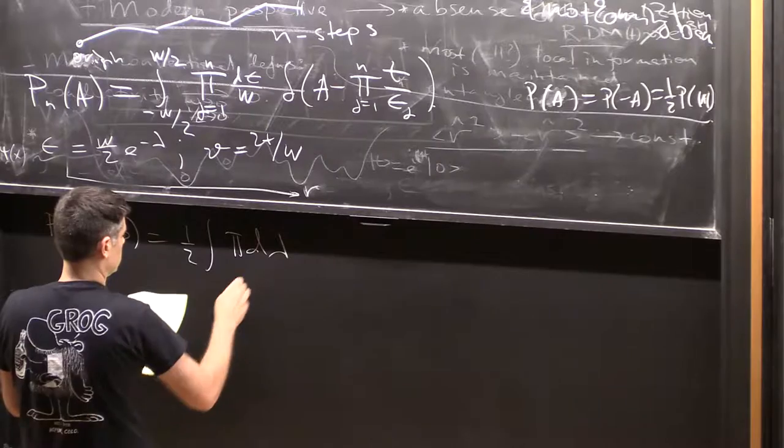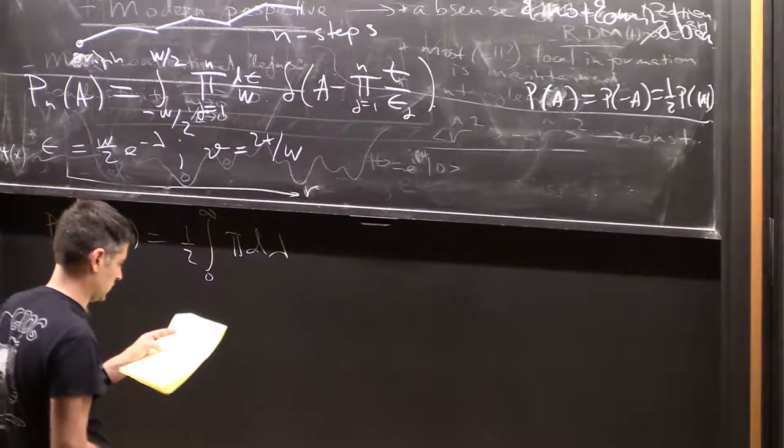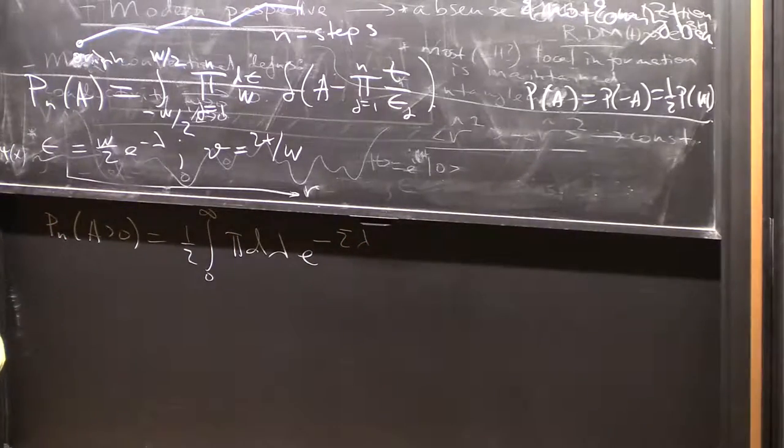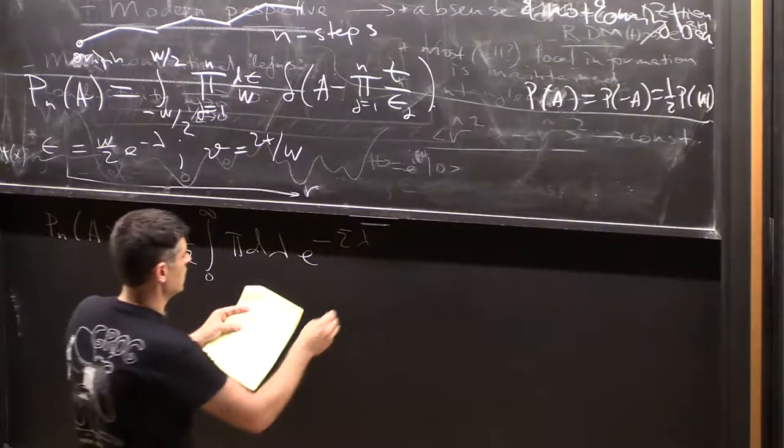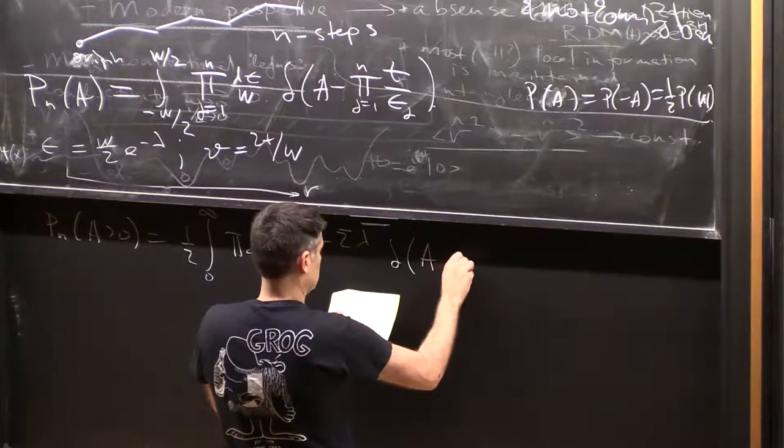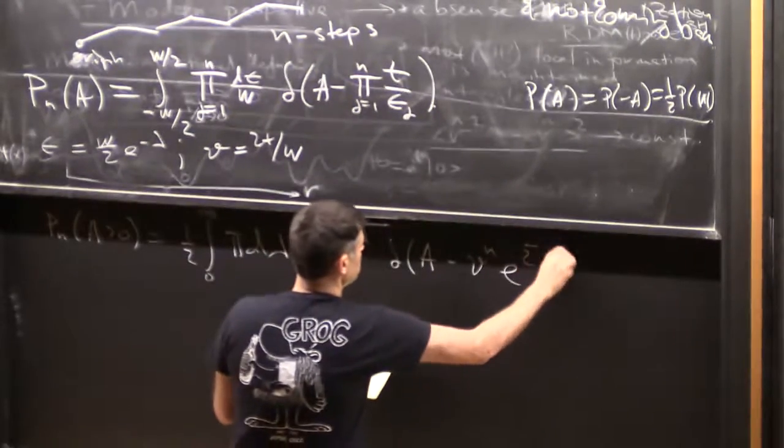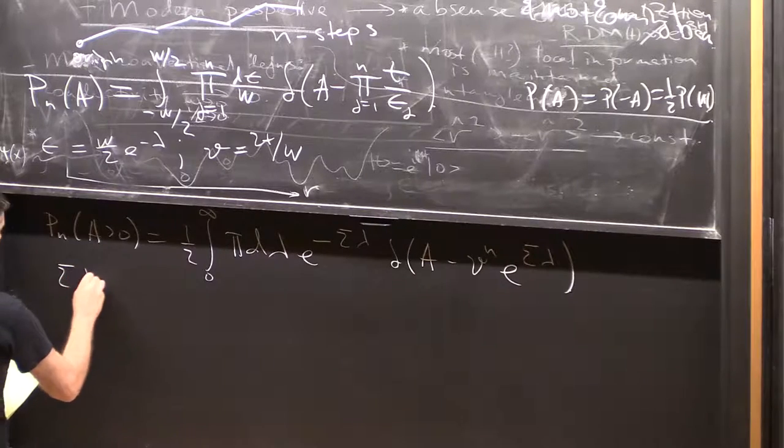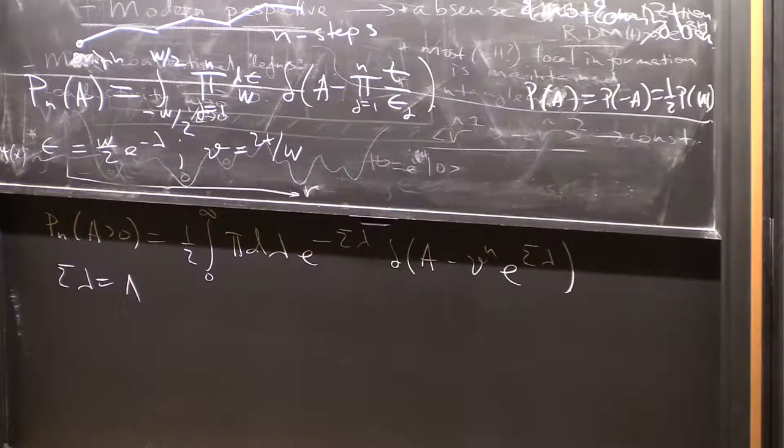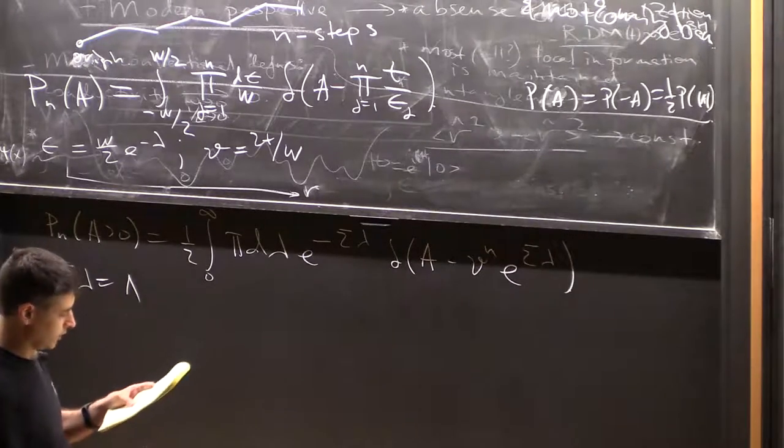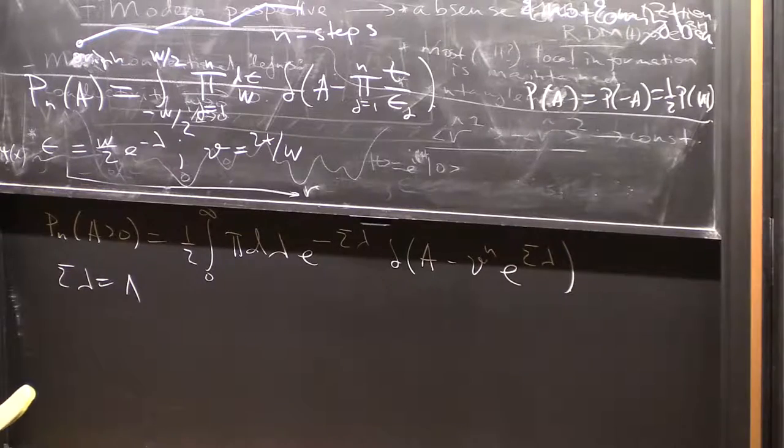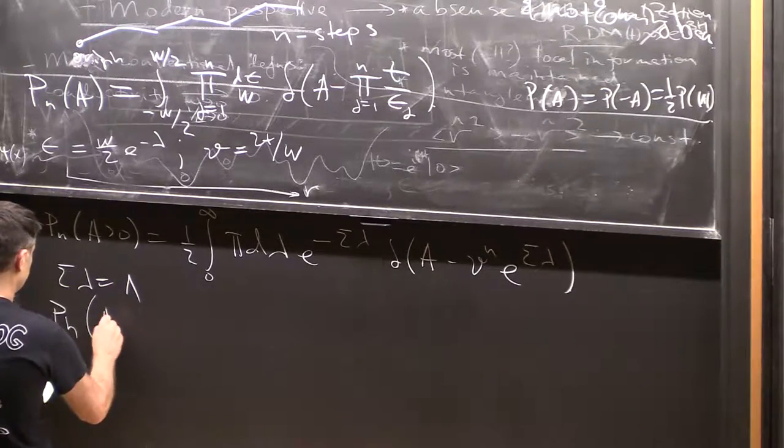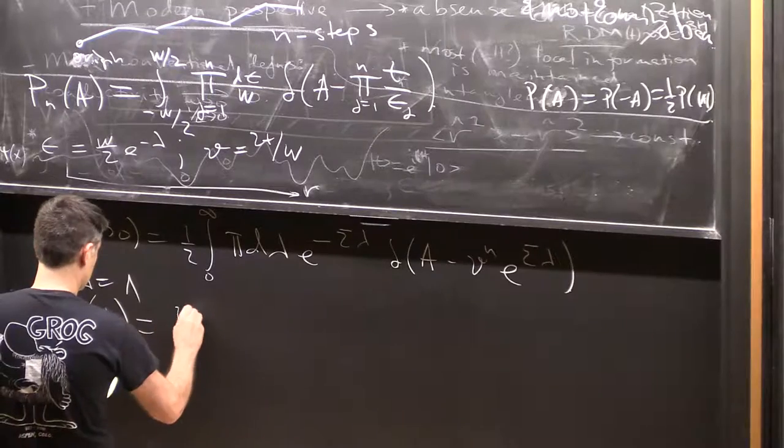These integrals are now zero to infinity. Because of this exponential substitution we get sum of lambda, and the delta function is now on v_n e to the sum of lambda, which we'll call capital lambda. The delta function you can massage it out—it's all doable. The probability distribution for just one path is an interesting function.